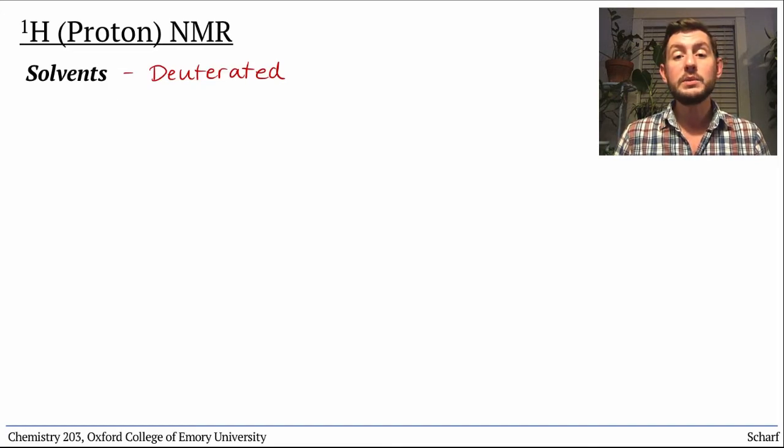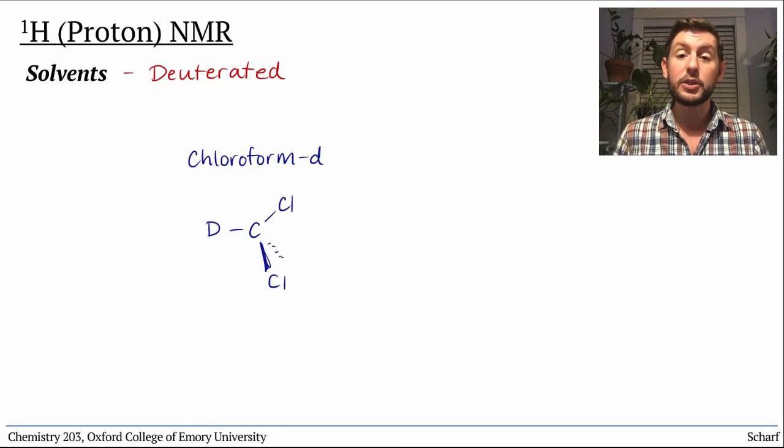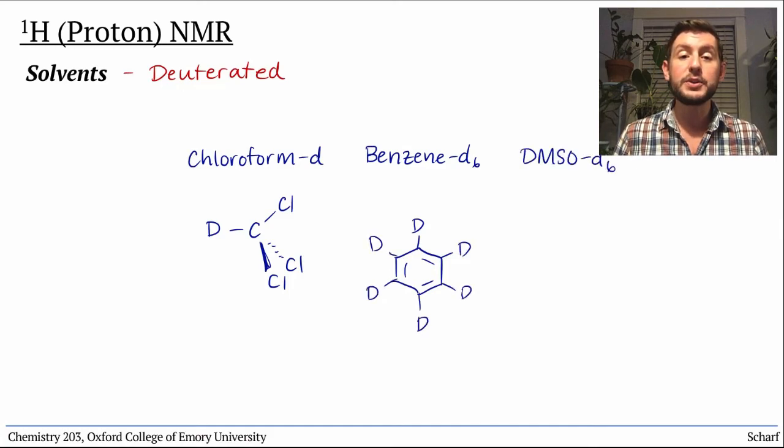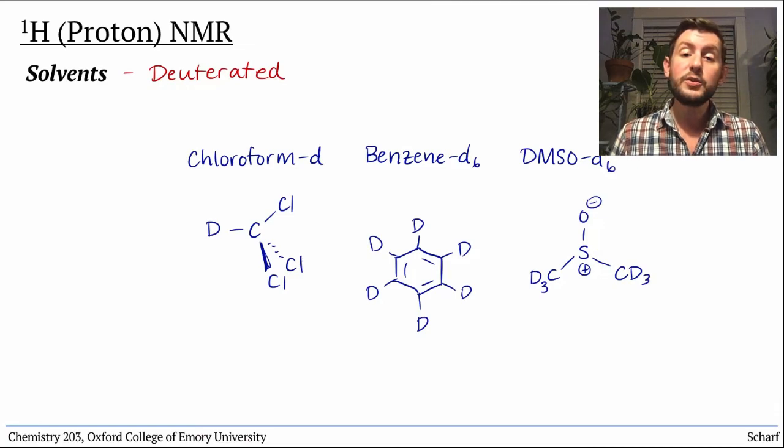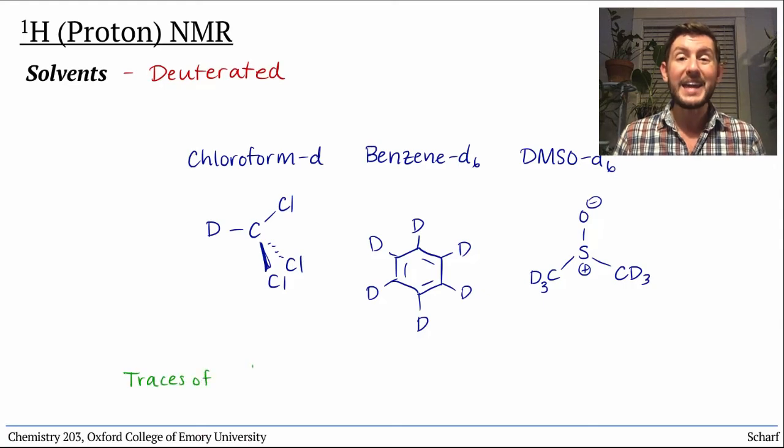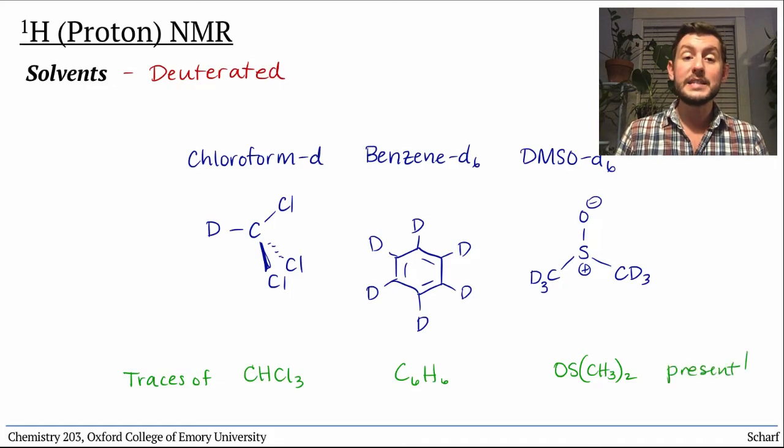Some of the most common solvents for this are chloroform D, CDCl3, benzene D6, and dimethyl sulfoxide D6. In the process of creating these isotopically enriched solvents, a small amount of the H1-containing solvent is usually still present. These are often seen in spectra and simply ignored.